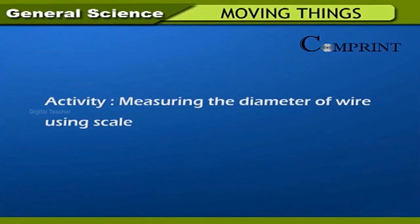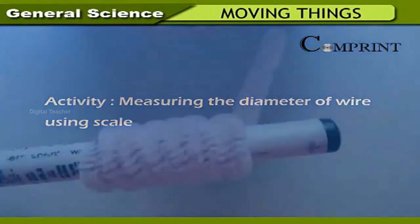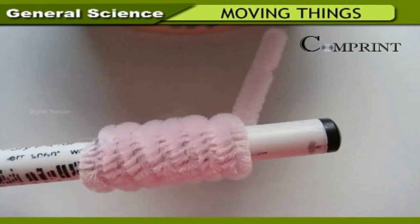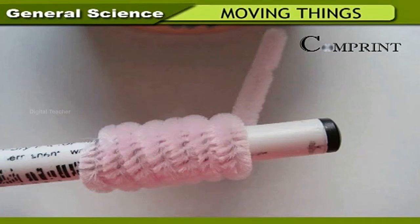Activity: measuring the diameter of wire using a scale. Take the wire whose diameter has to be measured and wind it around the pencil as shown. See that there is no gap between the turns of wire. Measure the length of the coil. For example, if the number of rounds is 24 and the length of the coil is 4.8 centimeters, then the diameter of the wire is 4.8 divided by 24, which equals 0.2 cm or 2 mm.